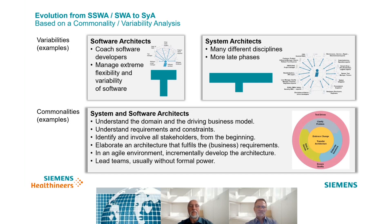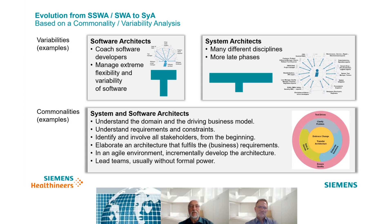But there are also major differences. From software architects we expect that they are experienced software developers who can coach the software developers in their team down to the bits and bytes, and they also have to deal with the extreme flexibility and viability of software. System architects, on the other hand, often have to deal with many different disciplines including software, electronics, mechanics, hydraulics, biochemistry, and so on. They cannot be experts in all these fields, but they need enough insight to involve experts from all these disciplines and make them work together as an architect team. And if hardware comes into the game, more life phases come into play — like production, logistics, up to disposal of the system — and all of these phases have to be accounted for in the architecture.